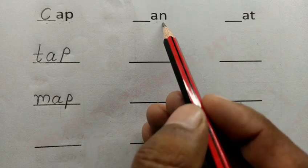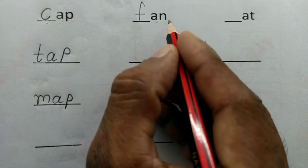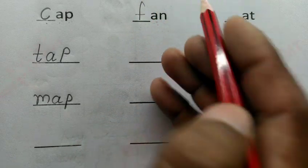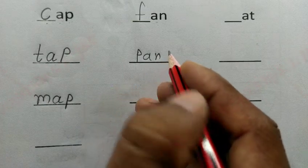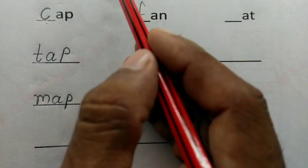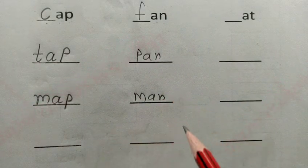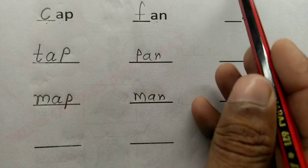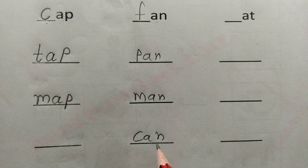पीछे A-N वाले हमें यहाँ लिखने हैं: F-A-N fan, P-A-N pan, M-A-N man, C-A-N can।